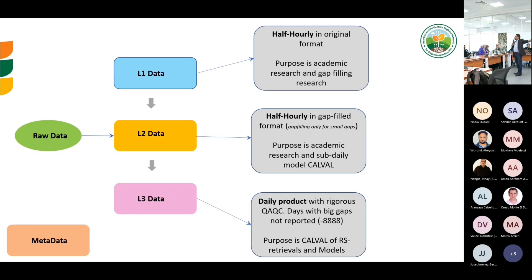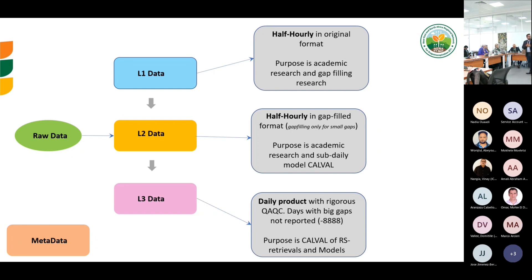L1 is the original half-hourly data, which has gaps. L2 is the half-hourly data that is gap-filled. In the protocol, small gaps — defined as gaps of up to three hours continuously — can be filled. Gaps longer than three hours are large gaps and may not be fillable.